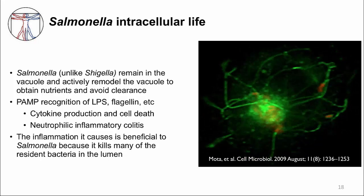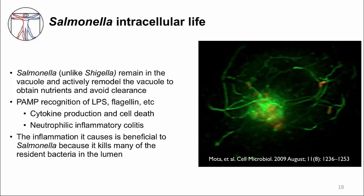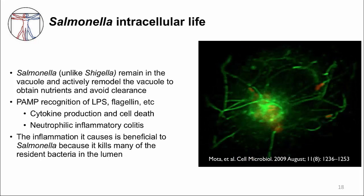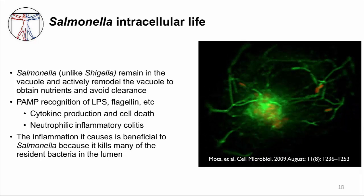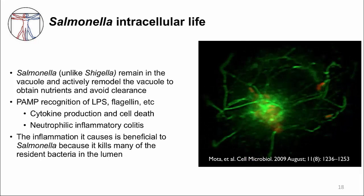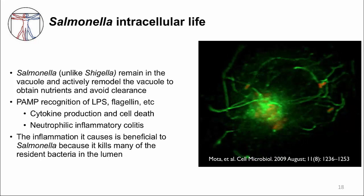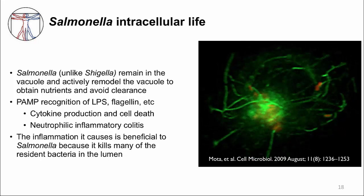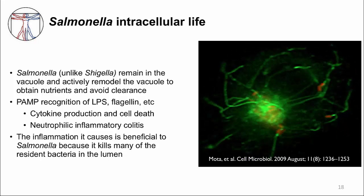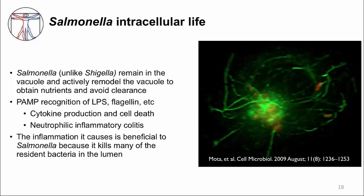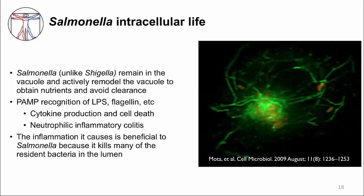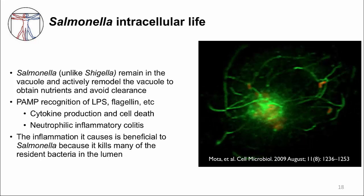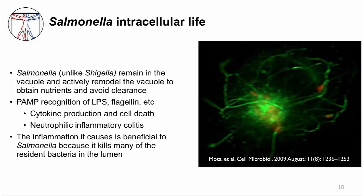Salmonella can also modify the vacuole using the second type 3 secretion system, injecting effectors to bring nutrients into the vacuole it needs to survive. However, some bacterial molecules such as LPS can leak into the cytosol, where the innate immune system detects them. Phagocytes are activated and secrete cytokines that recruit other inflammatory cells, resulting in inflammatory colitis and watery and bloody diarrhea. This inflammation also benefits Salmonella by killing much of the resident microbiota it would otherwise compete with.